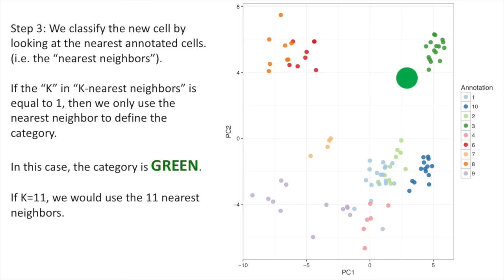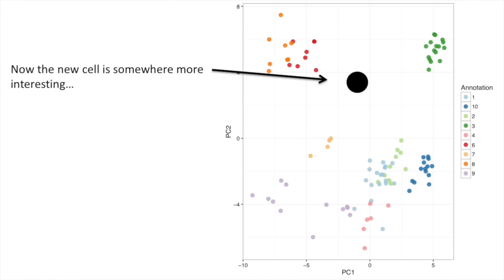If K equals 11, we would use the 11 nearest neighbors. In this case, the category is still green because the 11 cells that are closest to the unknown cell are already green.